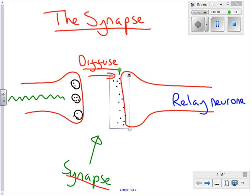When these chemicals reach that next neuron, it then starts a new nerve impulse in that next neuron. And that's how the nerve impulse crosses the synapse.